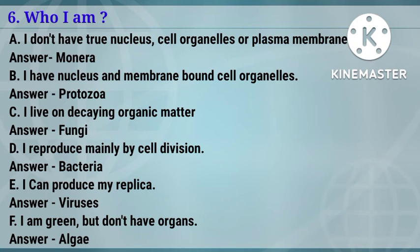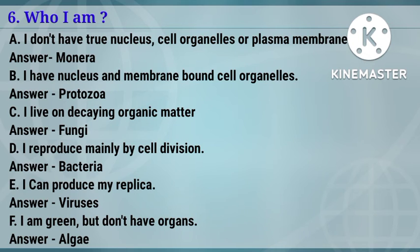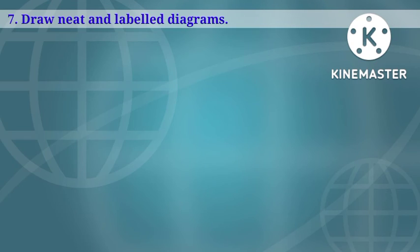Question six — Who am I? A: I don't have a true nucleus, cell organelles, or plasma membrane — the answer is Monera. B: I have a nucleus and membrane-bound cell organelles — the answer is Protozoa. C: I live on decaying organic matter — the answer is Fungi. D: I reproduce mainly by cell division — the answer is Bacteria. E: I can produce my replica — the answer is Viruses. F: I am green but don't have organs — the answer is Algae.